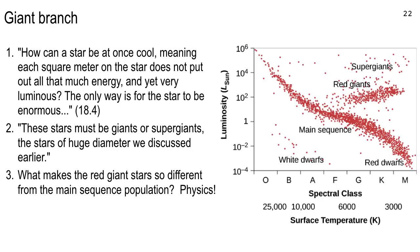We've got the HR diagram and some patterns — the main sequence, the secondary patterns of giants and supergiants. Notice that there aren't many supergiants, but there are plenty of red giants and regular giants of other colors — orange and such. Why are red giants different? Why did they land at a different place outside the main sequence? There's gravity, there's nuclear fusion — but why is it different?